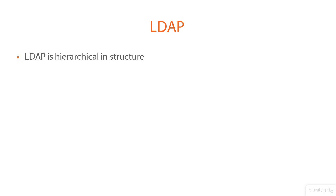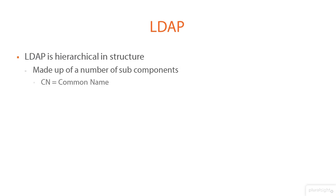If we look at LDAP in a little more detail, LDAP is a hierarchical structure made up of a number of subcomponents. Some of those are things like a CN, or common name; an OU, or organizational unit; and then DC, or domain component.